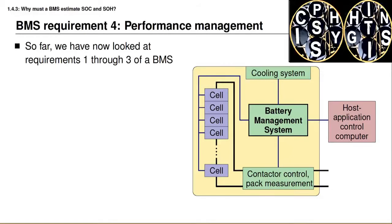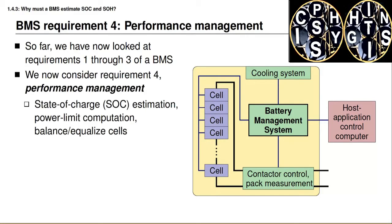Last week you learned that there are five major requirement areas that must be satisfied by a battery management system. So far you've learned about requirements 1 through 3 in more detail. In this lesson we consider requirement 4, which has to do with performance management, and this includes computing estimates of state of charge and available power and having an ability to balance or equalize cells in a battery pack.